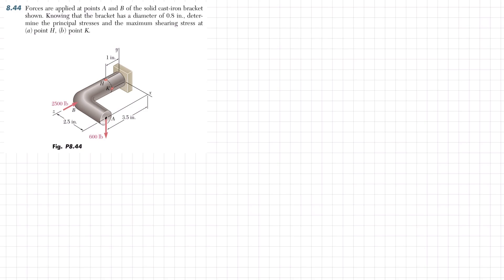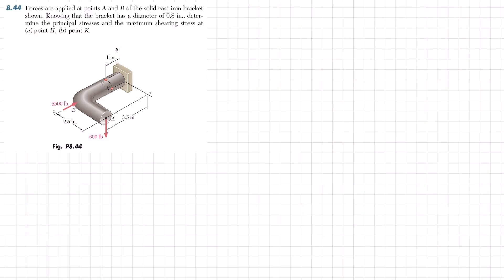Welcome back. Problem 8.44: forces are applied at points A and B of a solid cast iron bracket. Knowing that the bracket has a diameter of 0.8 inch, determine the principal stresses and maximum shearing stress at point H and at point K. At point B there is a load of 2500 pounds, and at point A there is a load of 600 pounds.